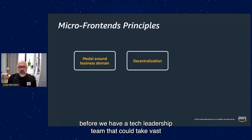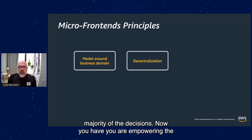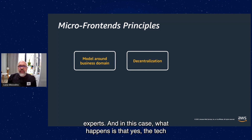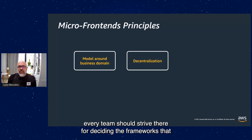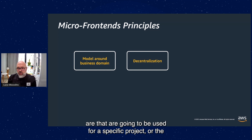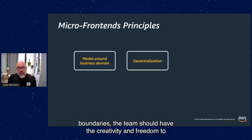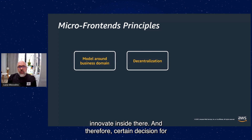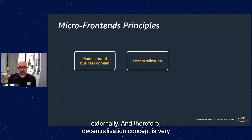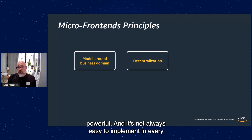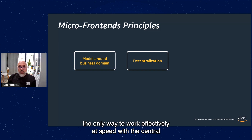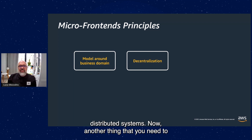With decentralization, whereas before a tech leadership team could take the vast majority of decisions, now you are empowering teams that are business and domain experts. The tech leadership should create guardrails — deciding the frameworks to be used for a specific project, or libraries for logging and observability — but inside those boundaries, the team should have the creativity and freedom to innovate. Decisions like which design pattern to implement should be tackled by the team itself. Decentralization is very powerful, and it's the only way to work effectively at speed with distributed systems.